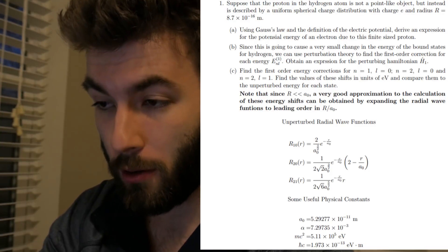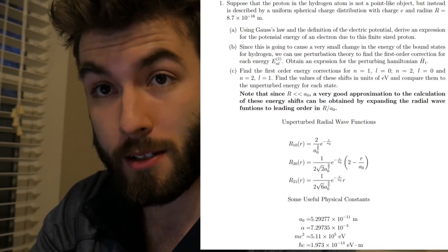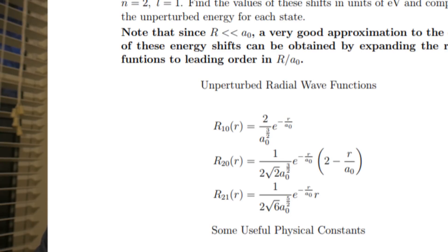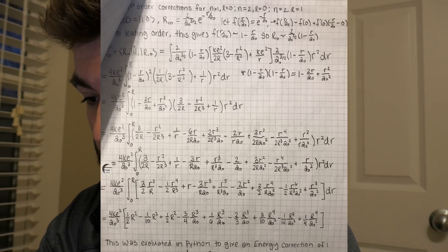And then below that it gives you three different radio wave functions. Now, a light bulb went off when I saw this, and I said that means that I can approximate all of these exponentials as a Taylor series, which means I can approximate all of these exponentials as polynomials. So when you find the correction to the energy for these different quantum numbers, it's as simple as just sandwiching your Hamiltonian in between your two wave functions and evaluating the integral.